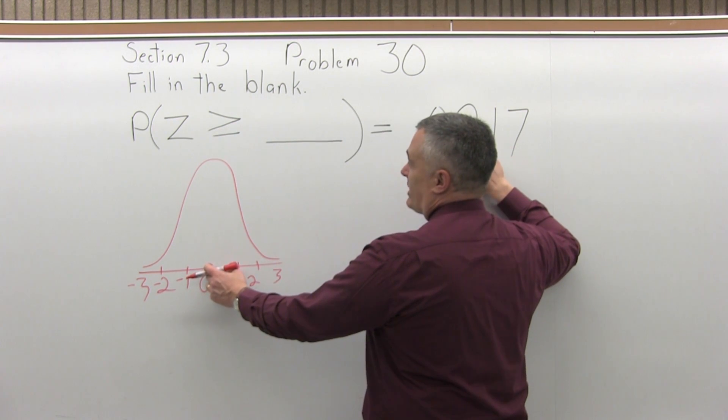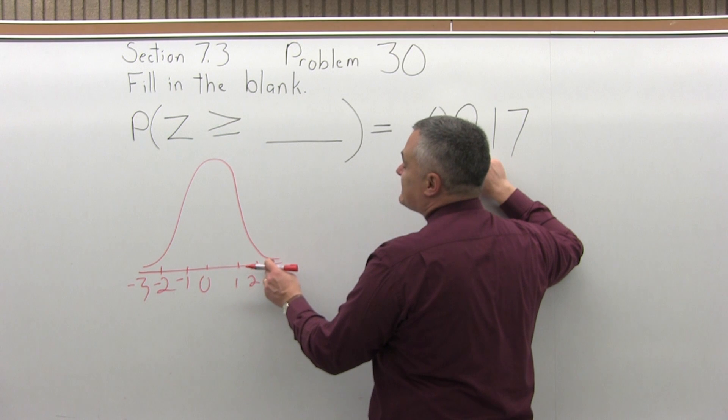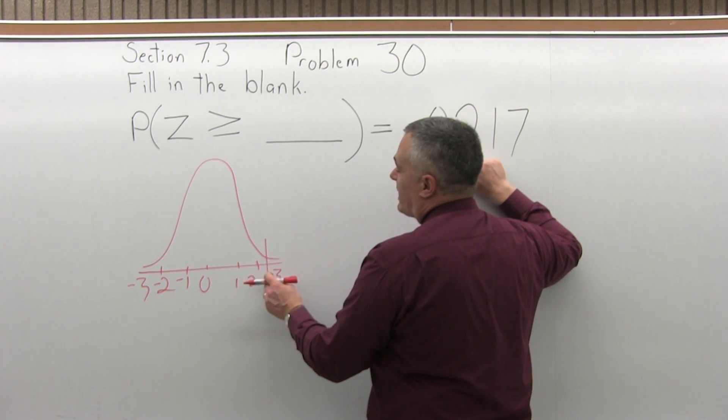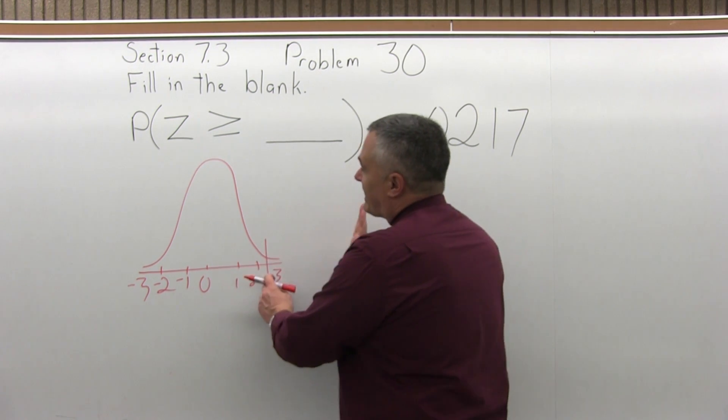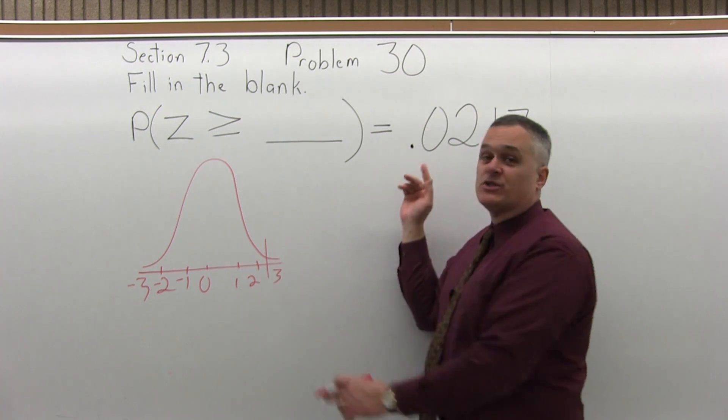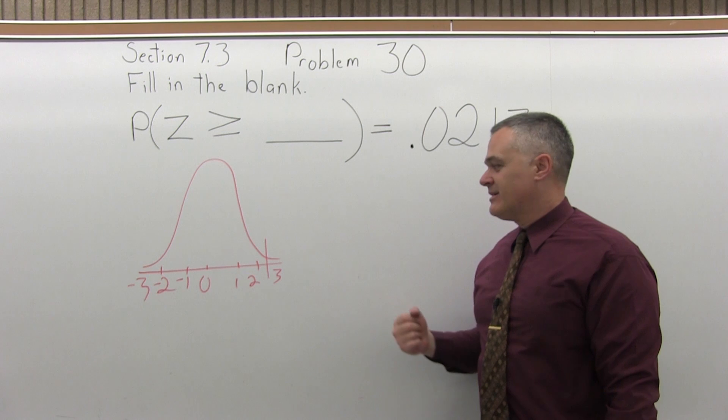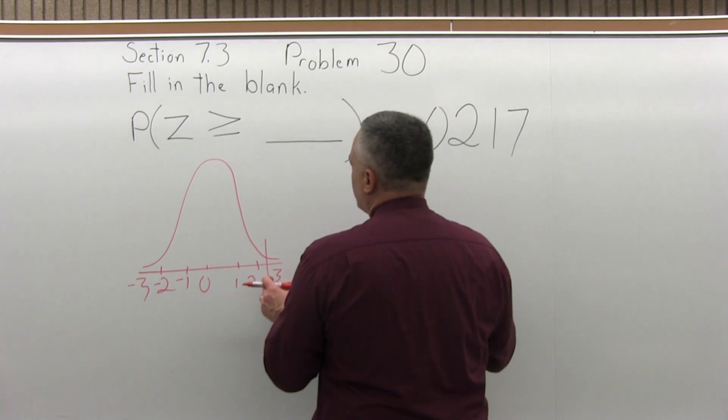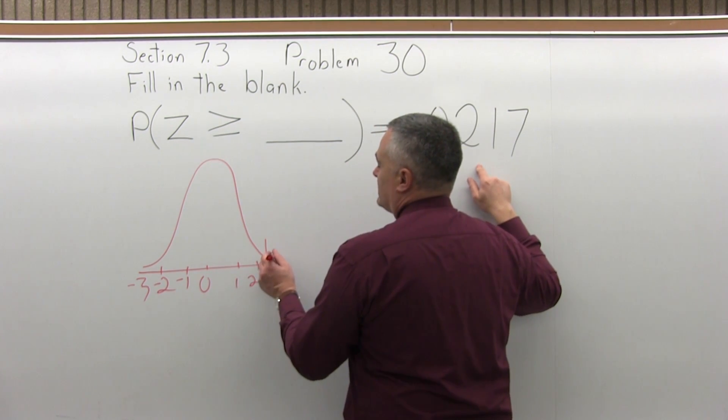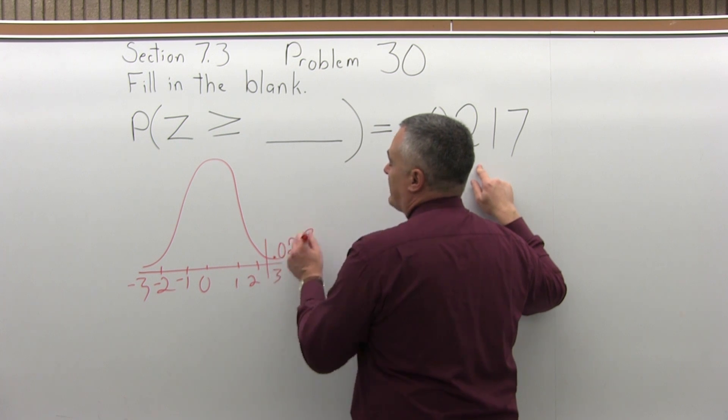The probability of being greater than the number I want to find is .02 something. I can tell because this probability is so small, the number I'm looking up is pretty far into the right end. What's left that's bigger than the number I need to find is .0217.